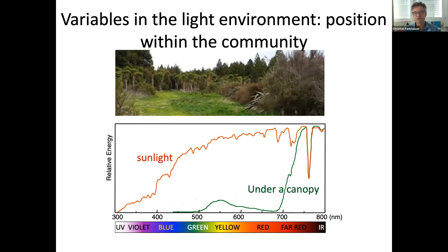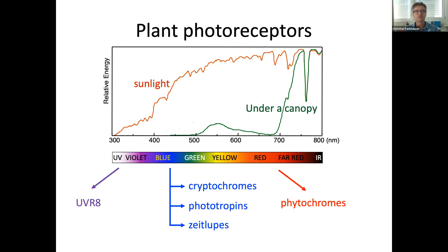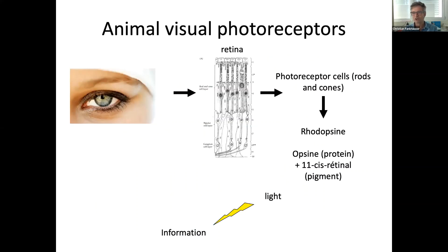If the plant is in an open environment, not shaded by competitors, it basically gets the full sun spectrum. In contrast, if a plant is under a canopy of other plants, this spectrum changes dramatically — mostly depleted in blue and red because the chlorophyll pigments absorb these wavelengths. There is much more green and yellow left. Interestingly, there is also a lot of far-red light — red light that our eyes cannot really see anymore, but not quite infrared yet. Plants are very sensitive to this far-red light. This is very different from a cloud, which might disappear a few minutes later, whereas a plant competitor growing above you is probably going to stay.